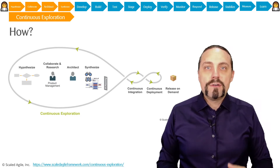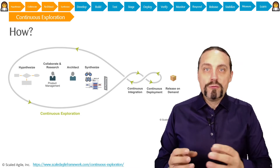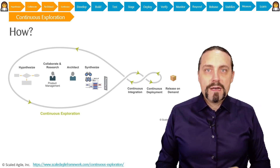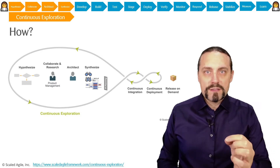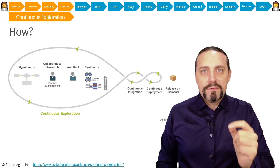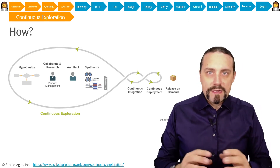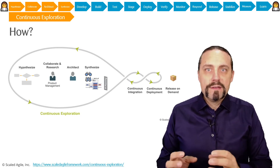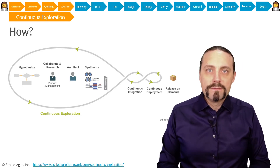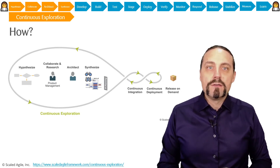After that we go into architect, where we define the minimal architecture needed to prove the hypothesis. Then we go into synthesize. We have now identified the real customer need, the real problem that needs to be solved, we have a clear hypothesis, and we have defined a minimal architecture to prove it. Therefore we are now able to create a vision, a roadmap, and a clear set of features which we can bring to our backlog. With that we are at the end of continuous exploration and at the beginning of continuous integration.